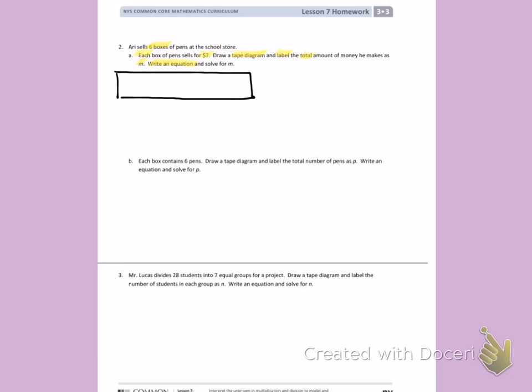If I look at the numbers I've highlighted, 6 boxes and each are $7, so I know I'm going to draw a picture that involves 6 boxes. There's my 6 boxes of pens. And each box sells for $7. His total money is represented with an M.